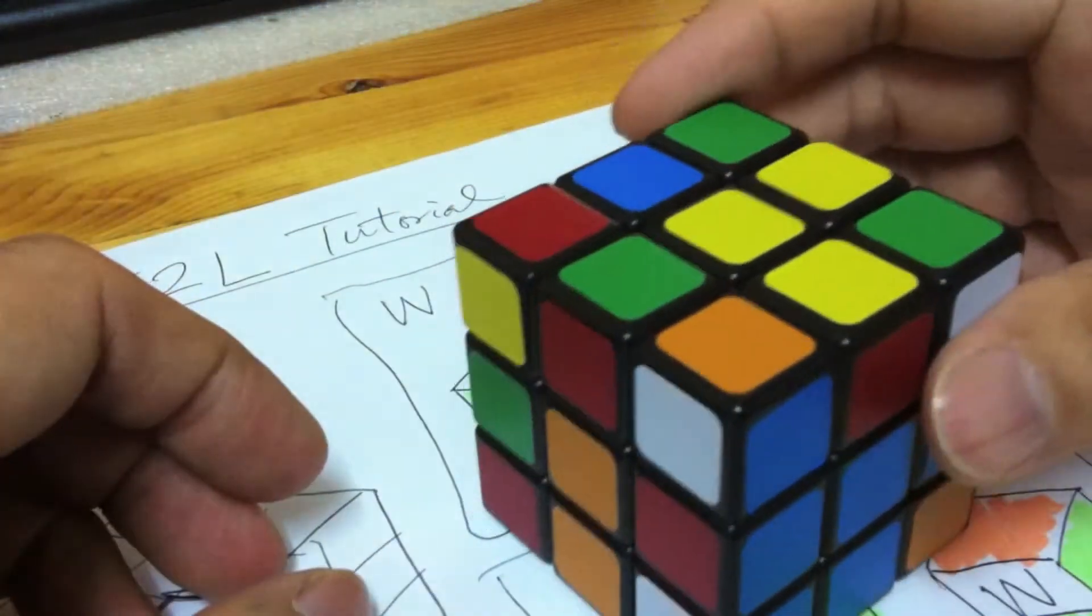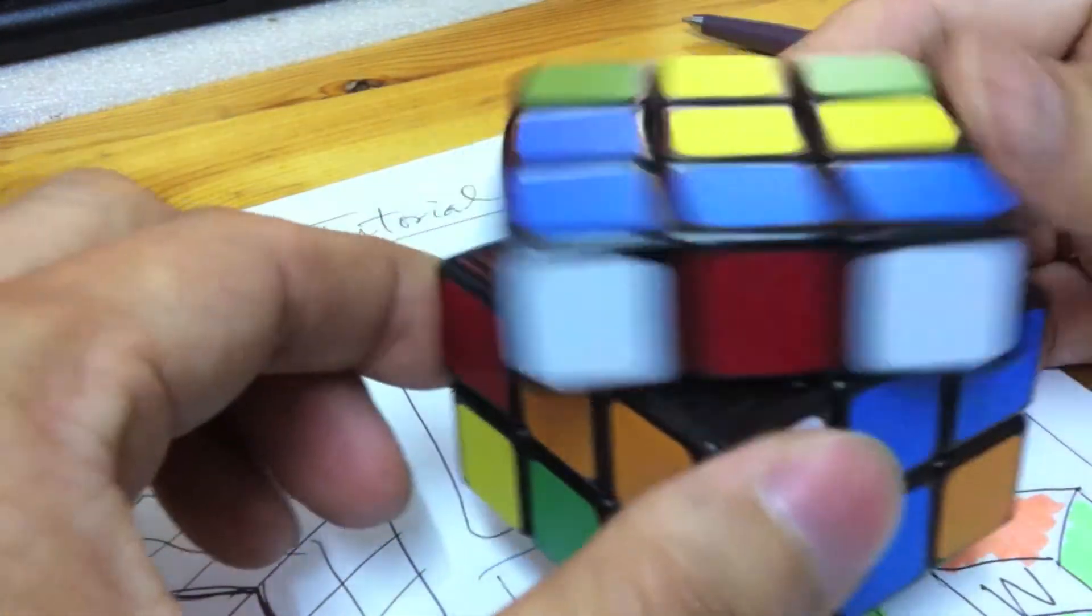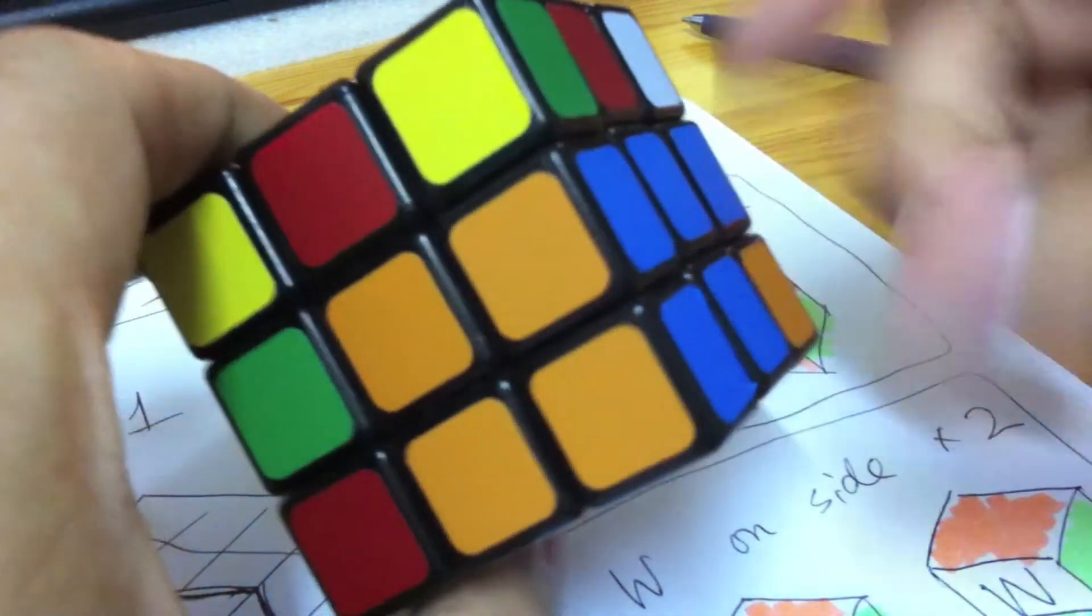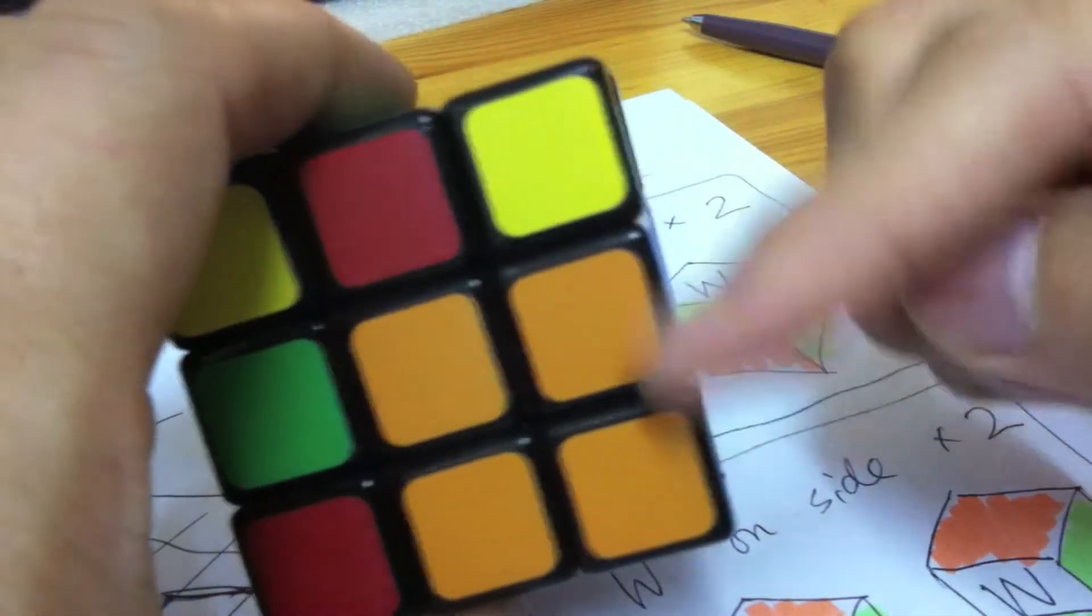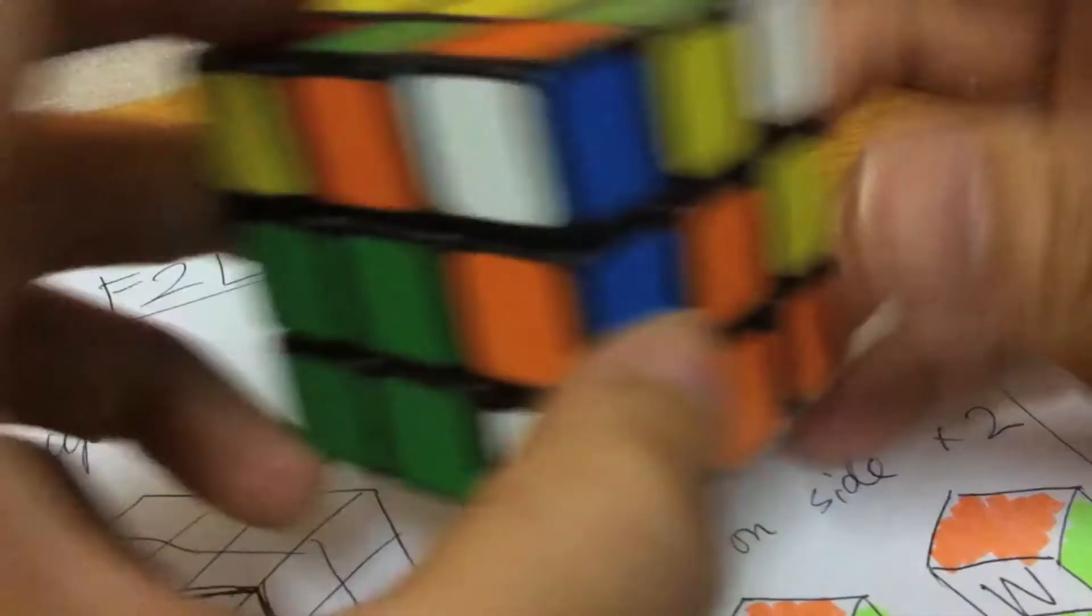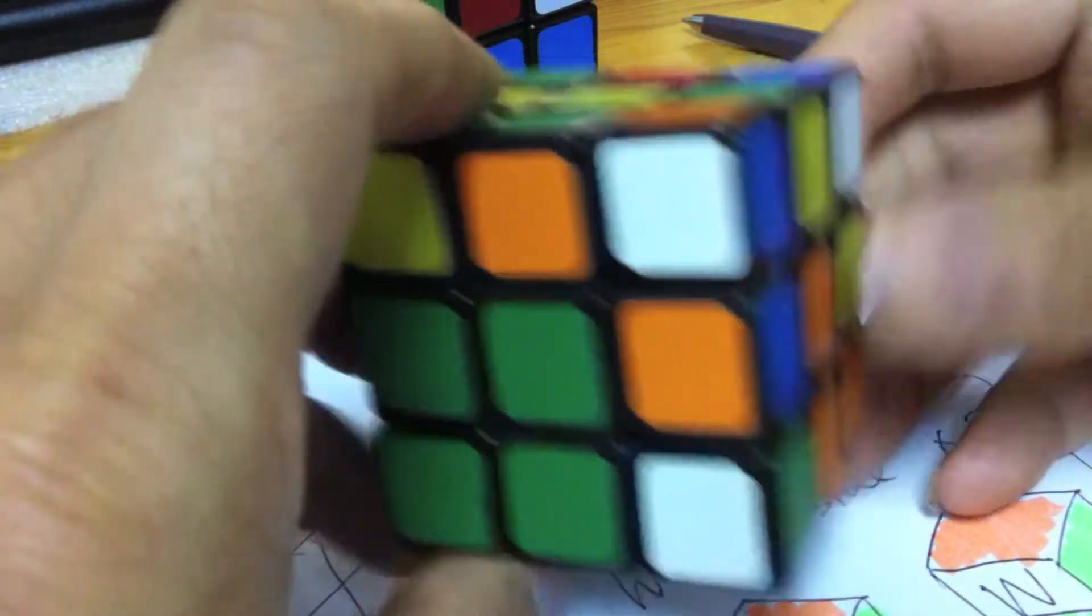See? By these three steps, they are inserted into their correct column with correct orientations. And for this one, white on the side, the solution is here.